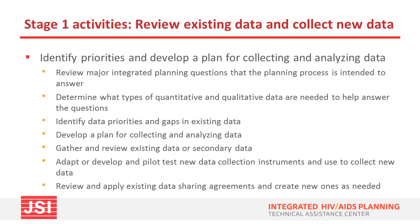Continuing with stage one activities: review existing data and collect new data. Integrated planning is a data-driven process that includes reviewing existing data, collecting new data, and analyzing and describing findings to make decisions. Developing a data plan involves reviewing major integrated planning questions, determining what quantitative and qualitative data are needed, identifying data priorities and gaps, developing a plan for collecting and analyzing data, gathering and reviewing existing data such as epidemiologic data and other needs assessments, adapting or developing new data collection instruments as needed, and using surveys, interviews, focus groups, and other methods to collect new data.